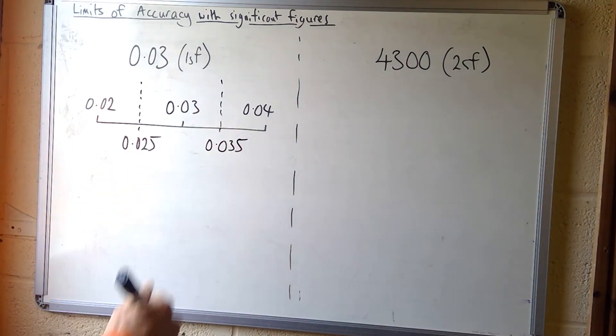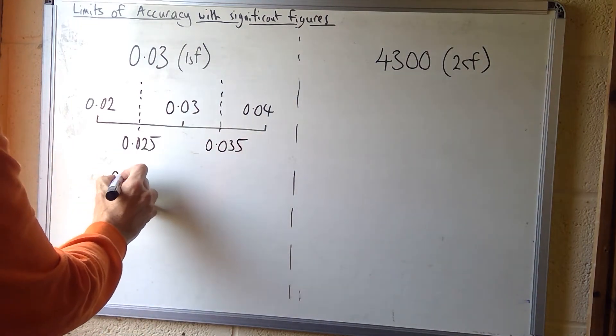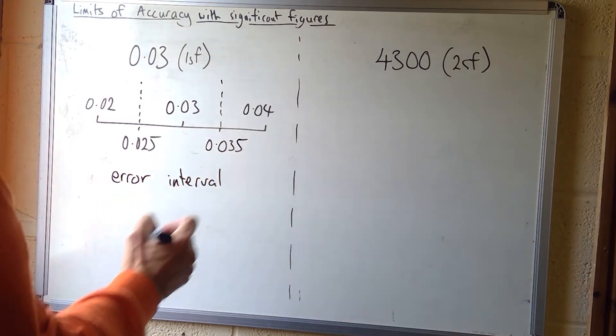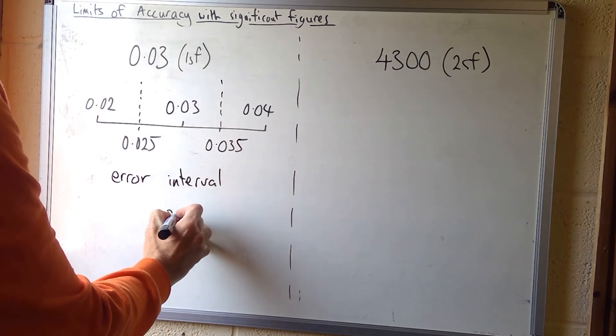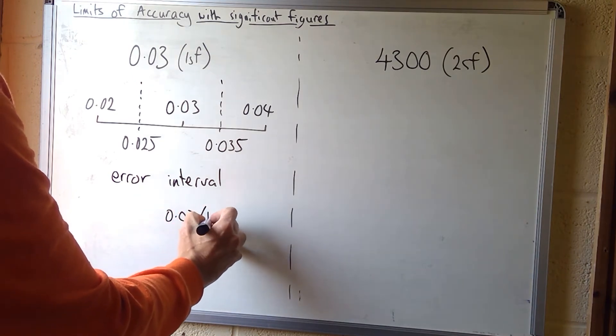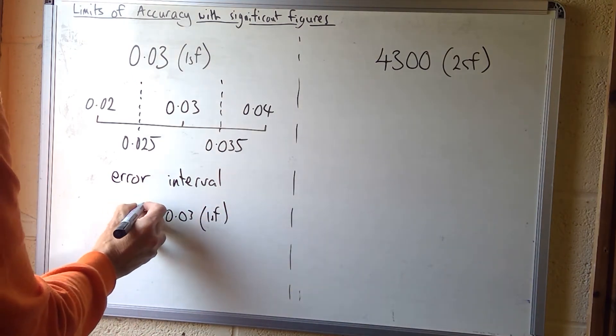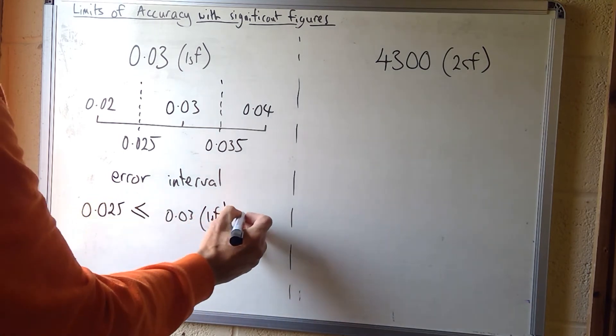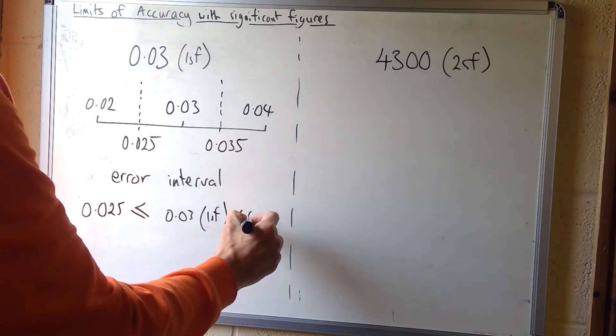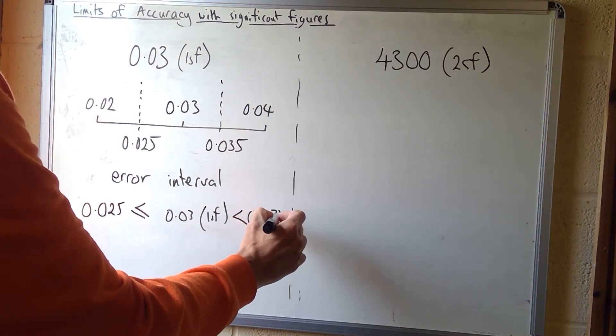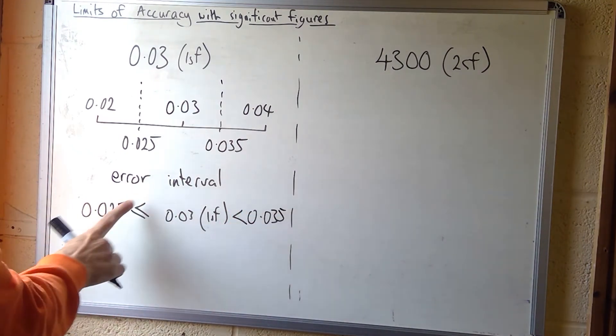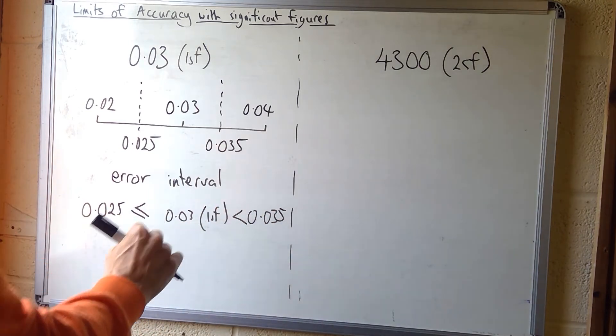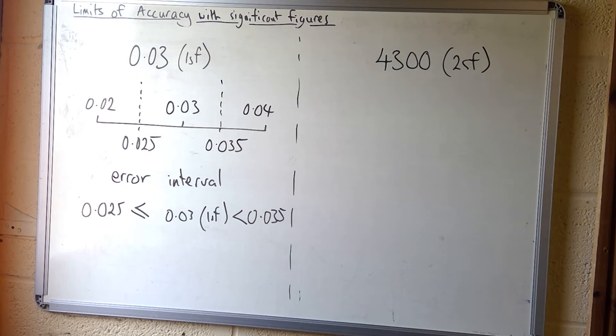The best way to write this is as an error interval. So 0.03 to one significant figure is greater than or equal to 0.025 and less than 0.035. Notice that the upper and lower bounds have two significant figures, while the rounded number has just one significant figure.